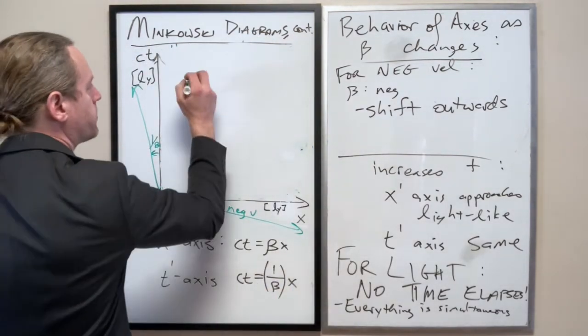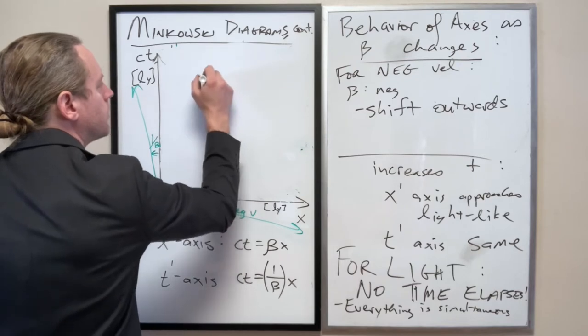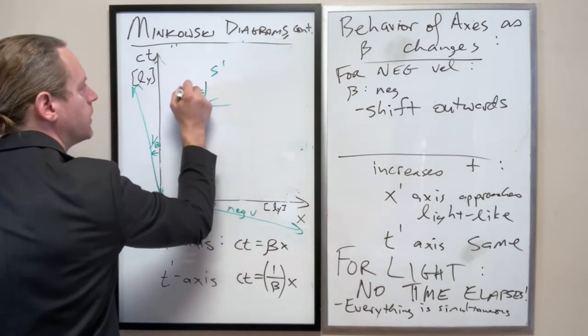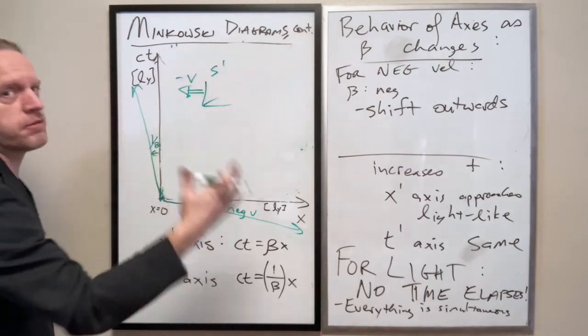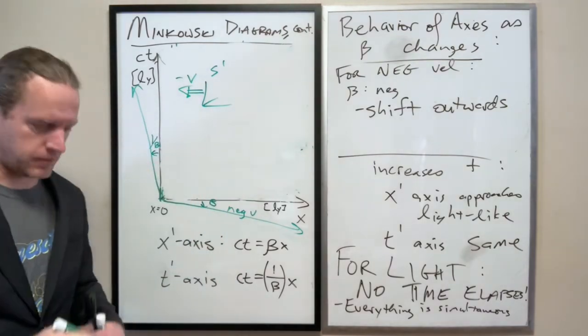And so remember, the green is s-prime. And what we're saying here, s-prime has some negative velocity, or v is negative something in the x-direction.